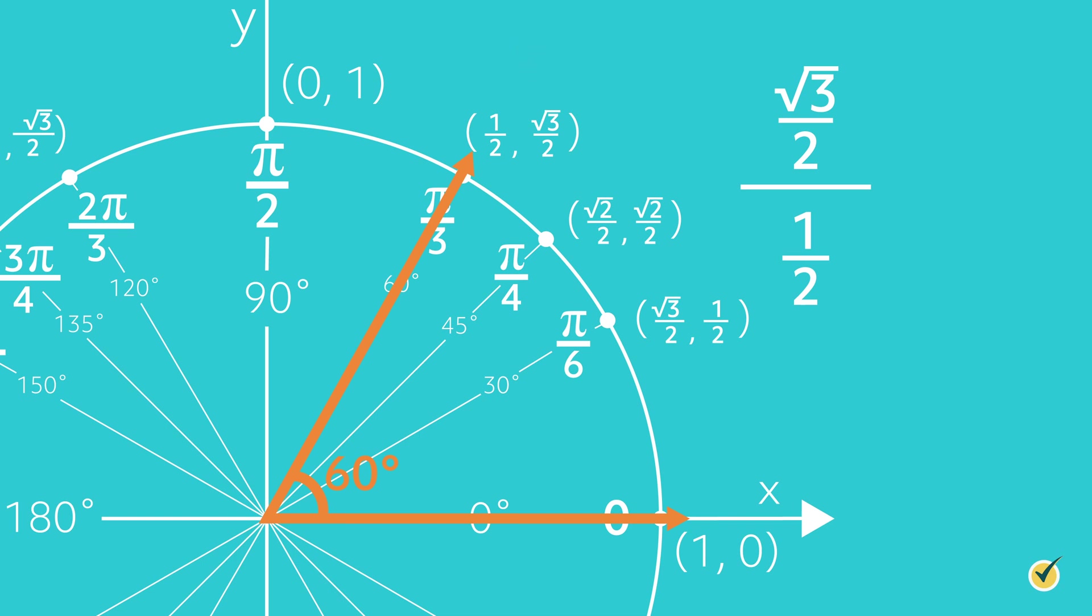Going back to our example of 60 degrees, the sine of 60 degrees is root 3 over 2, our y coordinate. The cosine of 60 degrees is 1 half, our x coordinate, and tangent of 60 degrees is root 3 over 1 half, which simplifies to root 3.